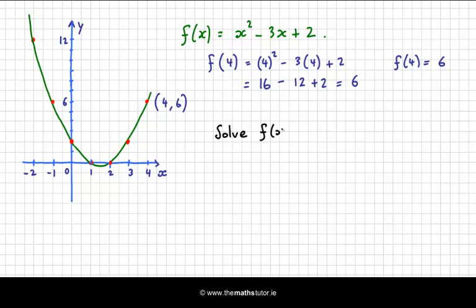Solve f(x) = 0. Now, we saw that when we substituted 4 in, we got 6 out. So what we're looking for here is what value of x do we substitute in to give us 0 as our output.